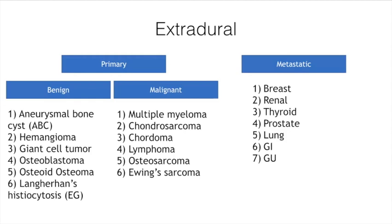For metastatic tumors, the most common primary sites are breast, renal, thyroid, prostate, lung, GI, and GU — the same as for the appendicular skeleton.